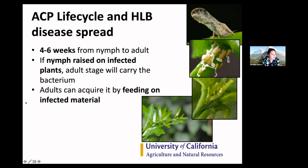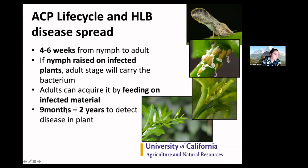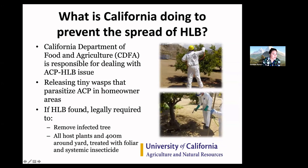Adults can also acquire HLB by feeding on infected material, but it's not as one-to-one — the relationship is not clear. An adult ACP feeding on an infected tree doesn't necessarily a hundred percent mean it's going to be a carrier, whereas with nymphs there's a very high chance they'll carry the pathogen as an adult. As I said before, it takes nine months to two years to detect the disease in the plant, so keeping these things off the plant is going to reduce risk greatly.